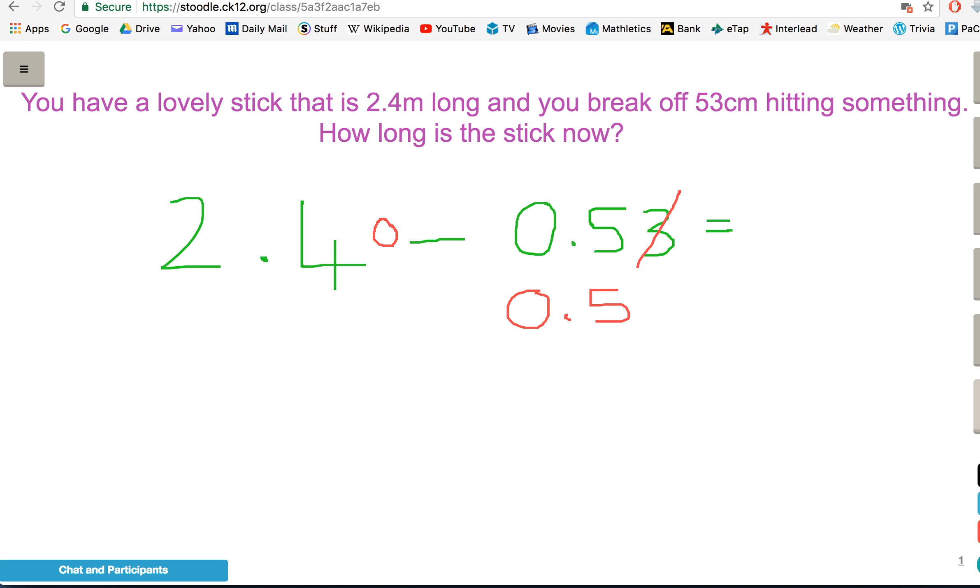So, 40 take away three is, of course, 37. They're not 37 holes, they're 37 hundredths. So, we've now got 2.37.